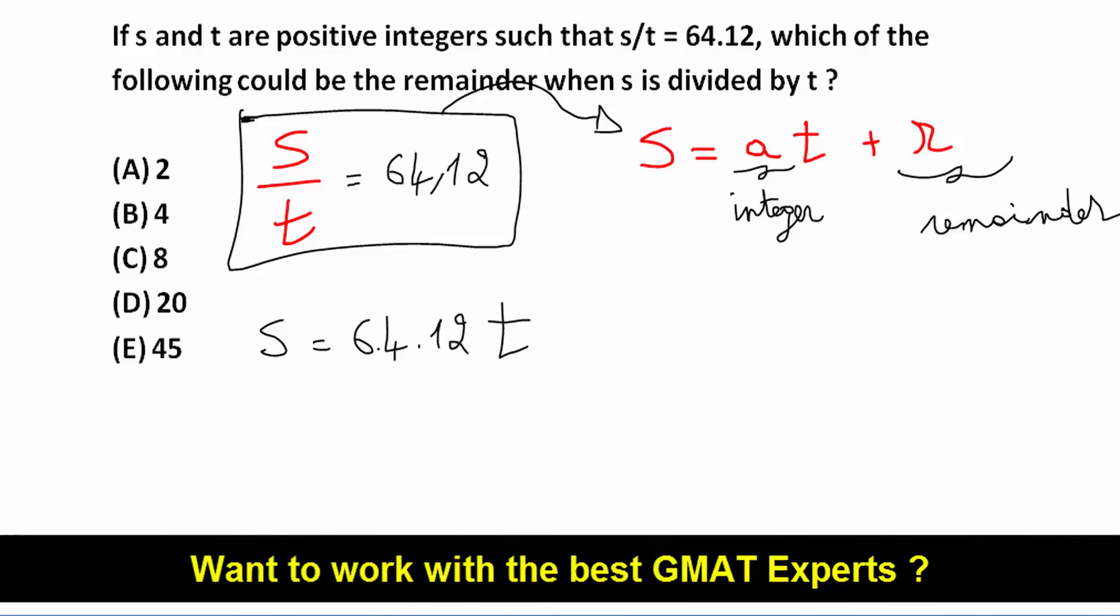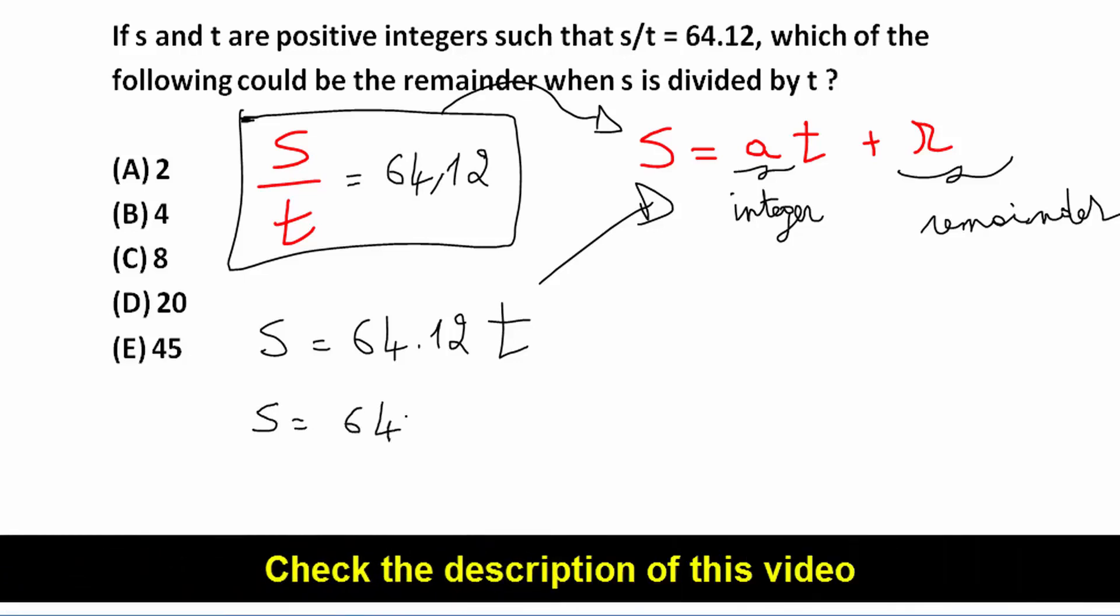So I want to transform this to something similar to this one. I can write here S is equal to 64 T plus 0.12 T.